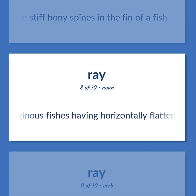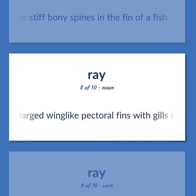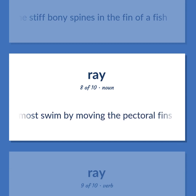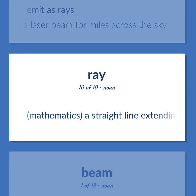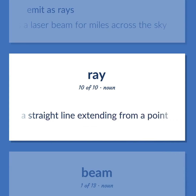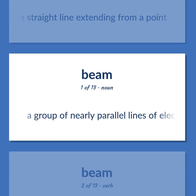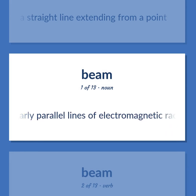Cartilaginous fishes having horizontally flattened bodies and enlarged wing-like pectoral fins with gills on the underside; most swim by moving the pectoral fins. Emit as rays — 'That tower rays a laser beam for miles across the sky.' Mathematics: a straight line extending from a point. A group of nearly parallel lines of electromagnetic radiation.